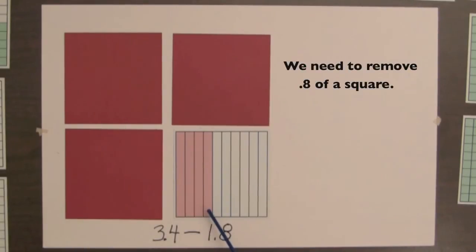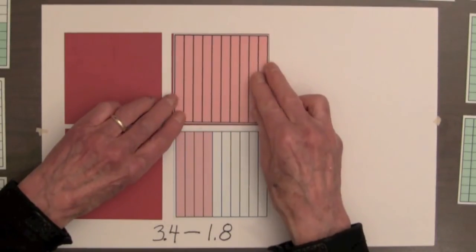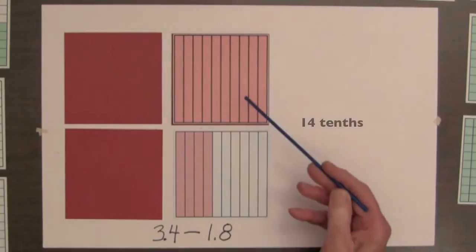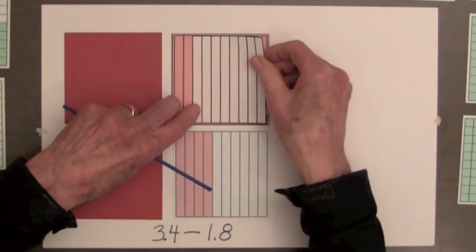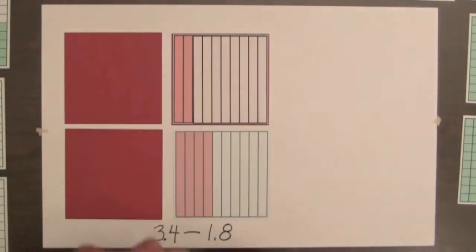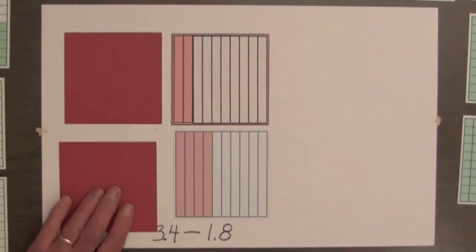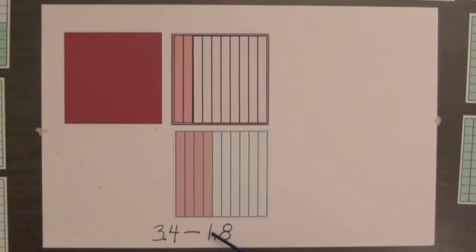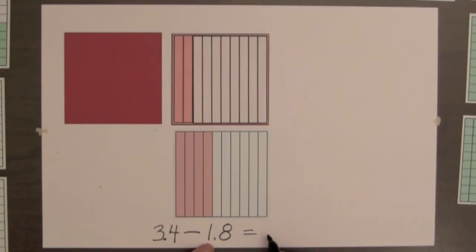We have a square for four tenths, but we need to remove eight tenths, so we replace one of the unit squares with tenths, giving us fourteen tenths. Now we can remove eight tenths by covering them up. This leaves two units and six tenths. Then we take away one unit square to subtract the one in 1.8, leaving one unit and six tenths. So 3.4 minus 1.8 equals 1.6.